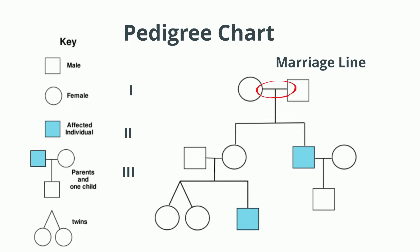The vertical line is called the line of descent and tells you that this couple reproduced and had offspring. The horizontal line is called the sibling line and tells you the children from the generation above.